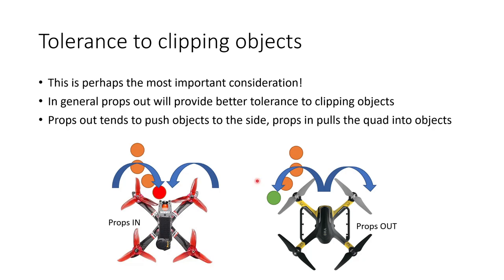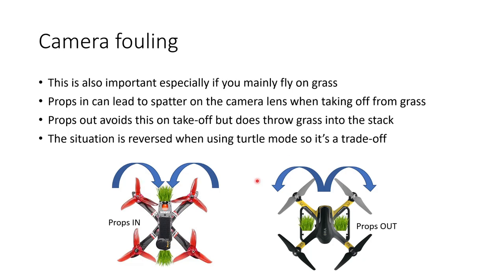So if this is really important to you then props out probably provides a little bit of an advantage when considering tolerance to clipping objects. The second consideration is camera fouling, and I think this is mainly important if you fly on grass, particularly long grass. In my experience, running props in can lead to spatter on the camera lens when you're taking off from grass, particularly if it's wet. Props out avoids this on takeoff but does end up throwing grass into the stack. However, this situation tends to be reversed when you're using turtle mode because the props spin in the other direction. So if you're running props out and you tend to use turtle mode, you'll probably find that's when you get stuff thrown onto your camera lens.